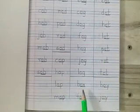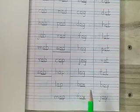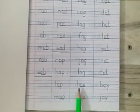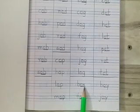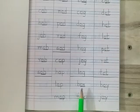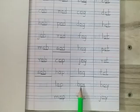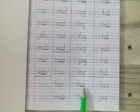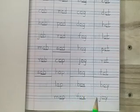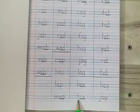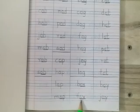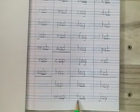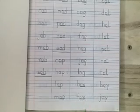Let's see OX words. B says B, O says O, X says X — Box. F says F, O says O, X says X — Fox.